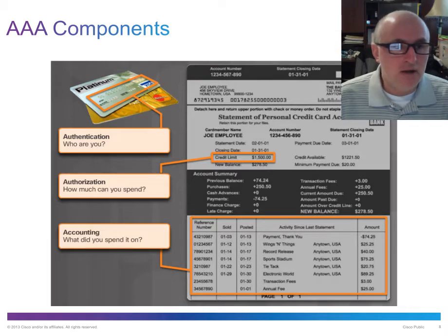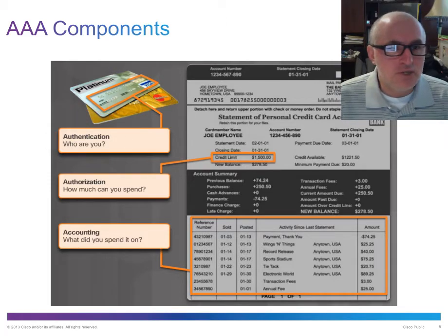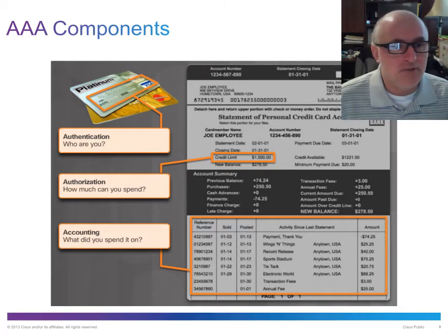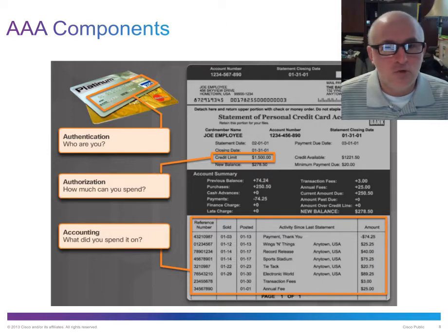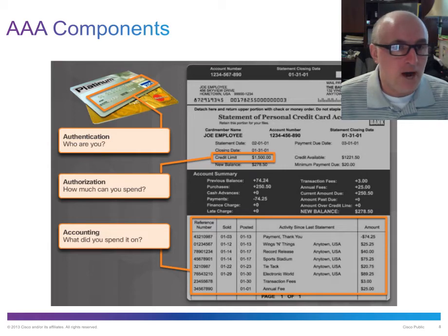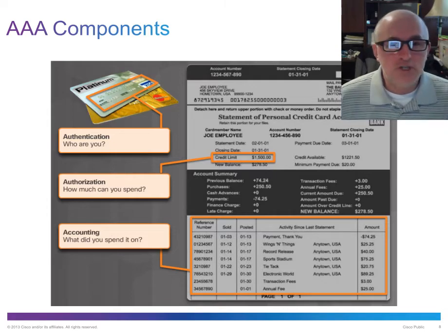There are three components to AAA. First, we want to authenticate the user — authentication is simply 'who are you?' It's usually accomplished through username and password, or for humans, a fingerprint or driver's license. Authorization is once we've identified who you are, we look up what you're allowed to do: your rights, privileges, and restrictions. That's account information — in Windows Server it's called group policies, in a Cisco device we often call that ACLs, access control lists, which limit what you're allowed to do based on who you are.